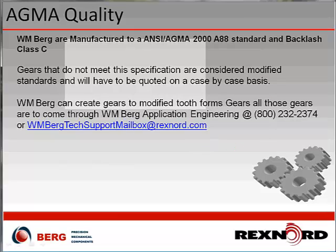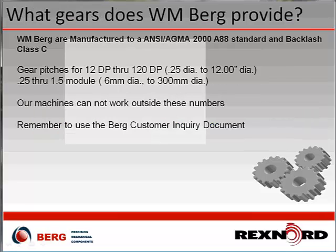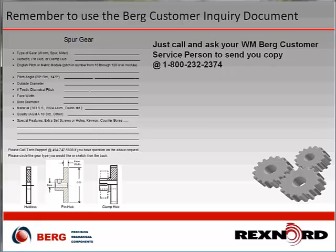WM Berg's gear pitches range from 12 to 120 diametral pitch. Our machines can produce gears as small as 0.25 inches in diameter and as large as 12 inches in diameter. On the module side, gears range from 6 millimeters to 300 millimeters in diameter. For custom applications, contact the Berg Customer Inquiry Department and request the Customer Inquiry document — you fill in the hub style, mount style, and other information for us to provide a quote.